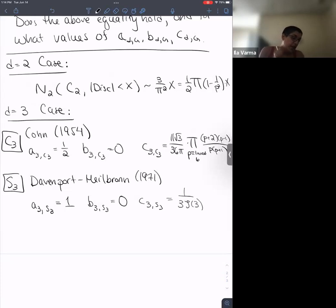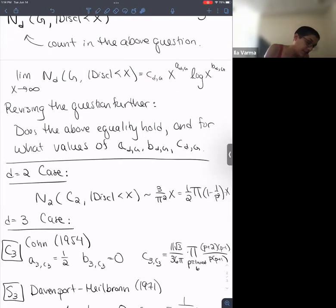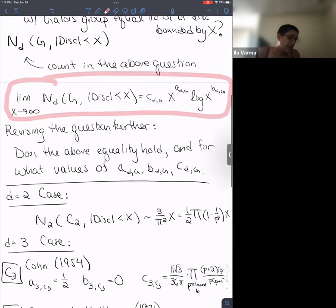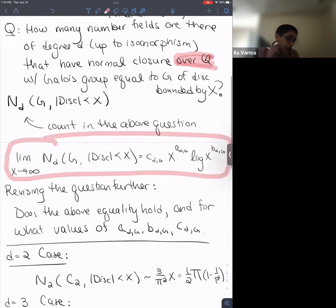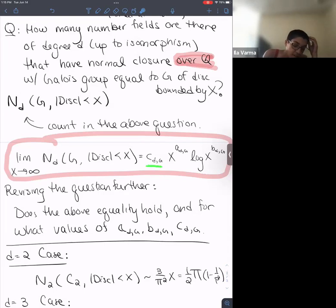One thing being recognized is that the number of degree D fields without any Galois group restriction would likely be asymptotic to O(X), so we would not expect log factors if a equals 1. To compare: a, b, and c are defined in the equation for the limit as X goes to infinity of N_D(G, disc < X), and when we want asymptotic information in arithmetic statistics, we look at what C_DG, A_DG, and B_DG are in this limit.